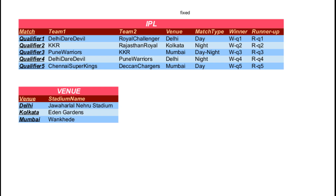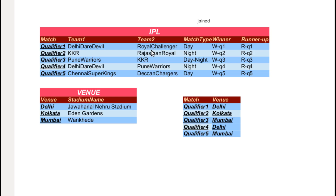For now just remember what I'm doing, because joining would be a separate tutorial by itself. So basically what I did is linked the two tables. Now we can easily refer which match is going to be played in which venue.